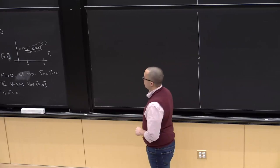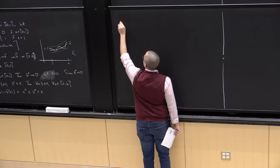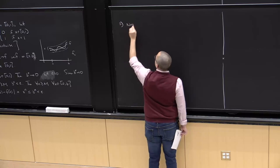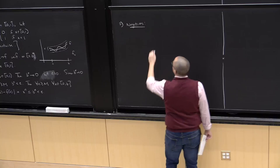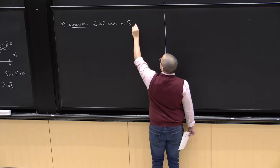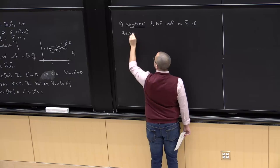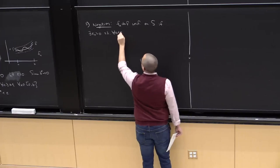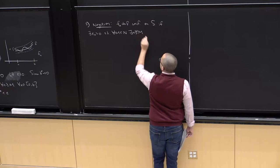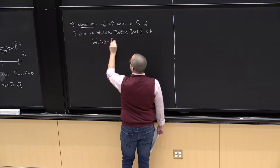Now let's prove part two. First, let's negate the definition of uniform convergence so we know what we're talking about. fn does not converge to f uniformly on S if there exists a bad epsilon-naught positive such that for all M natural number, there exists n greater than or equal to M and there exists x in S so that the absolute value of fn of x minus f of x is greater than or equal to epsilon-naught.